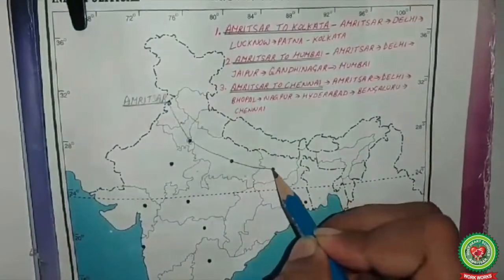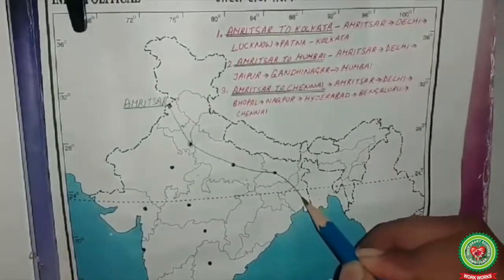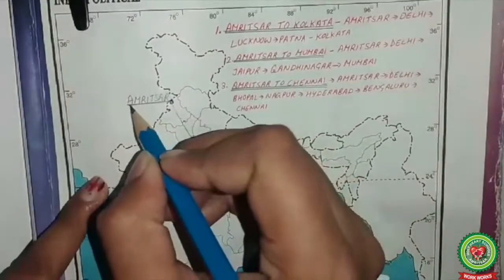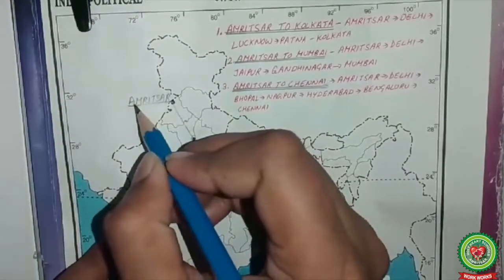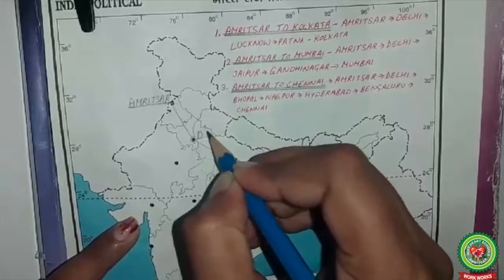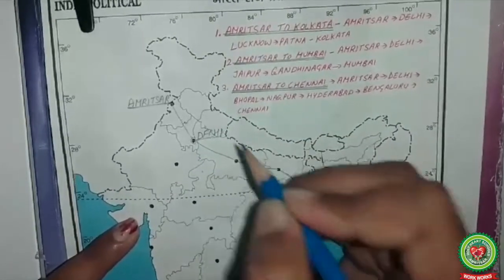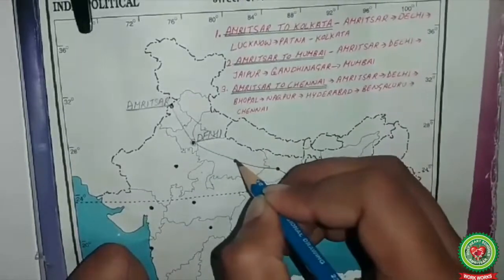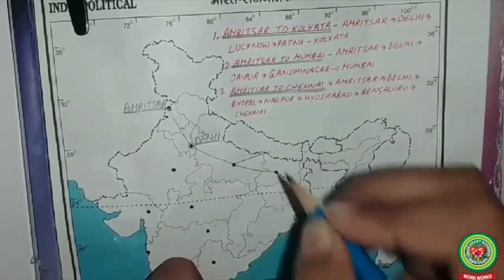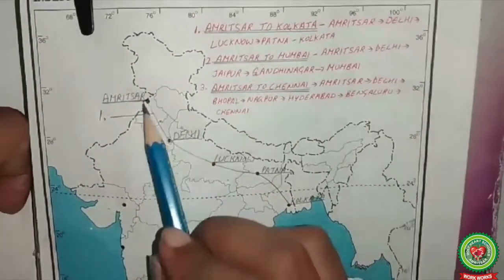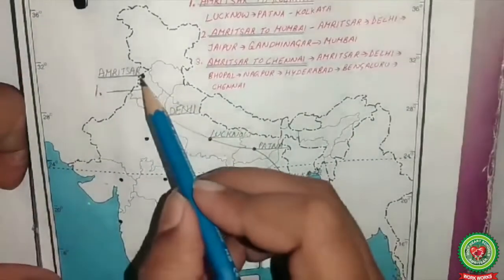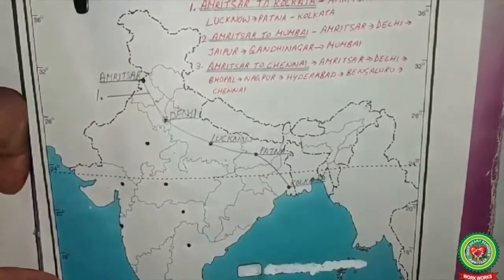Draw a line from Amritsar to Delhi, then from Delhi to Lucknow, from Lucknow to Patna, and from Patna to Kolkata. After drawing each line, mark a small line and write the city name — Amritsar, Delhi, Lucknow, Patna — all in capital letters. The lines should be straight and labels clearly written.